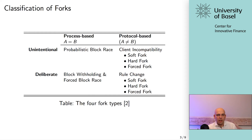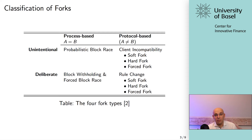Then we have the deliberate protocol-based forks, which are simple rule changes. For example, if someone came up with the idea that Bitcoin no longer needs proof of work and instead one person just calls the next state update — that would be completely incompatible with anything existing, a rule change, a different consensus protocol, and thereby a deliberate protocol-based fork.